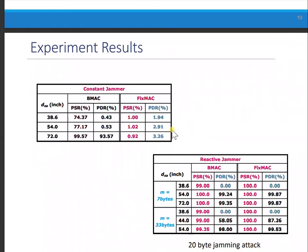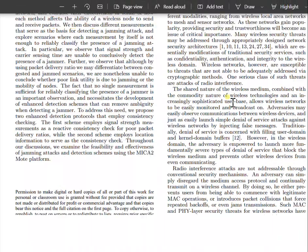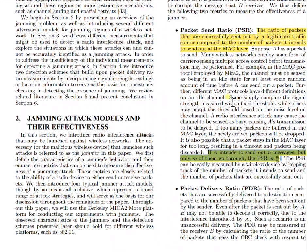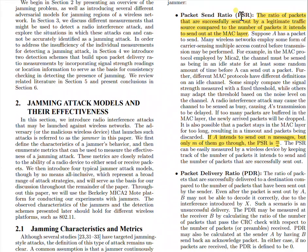What is in the experiment? We have the packet sent ratio and the packet delivery ratio. The packet sent ratio: if A intends to send out N messages but only M of them manage to find an empty medium, then PSR is M over N.